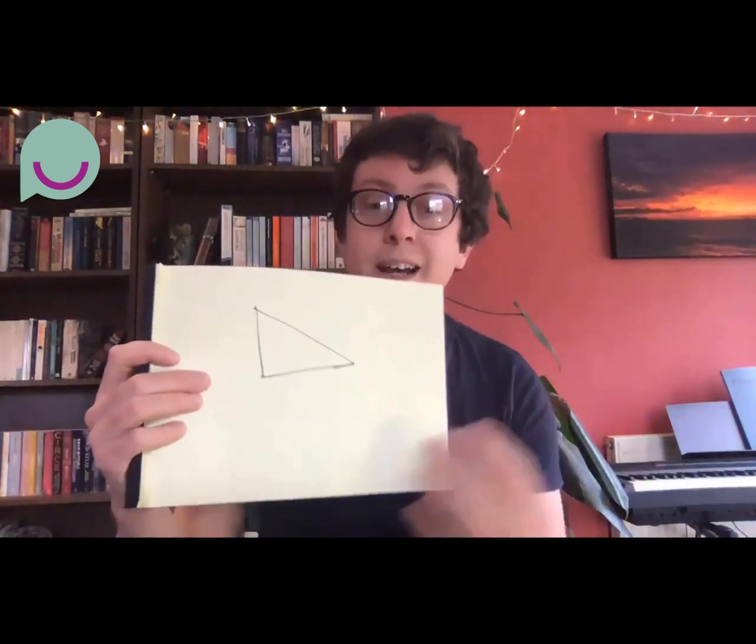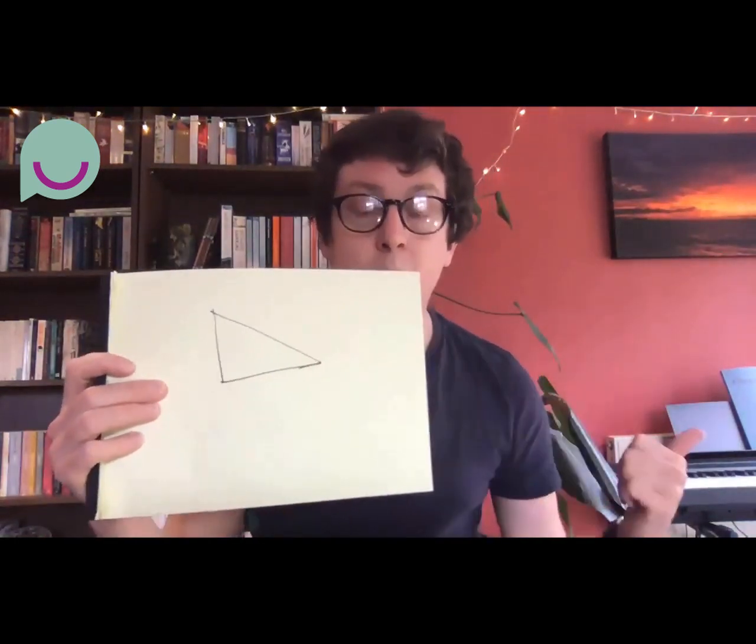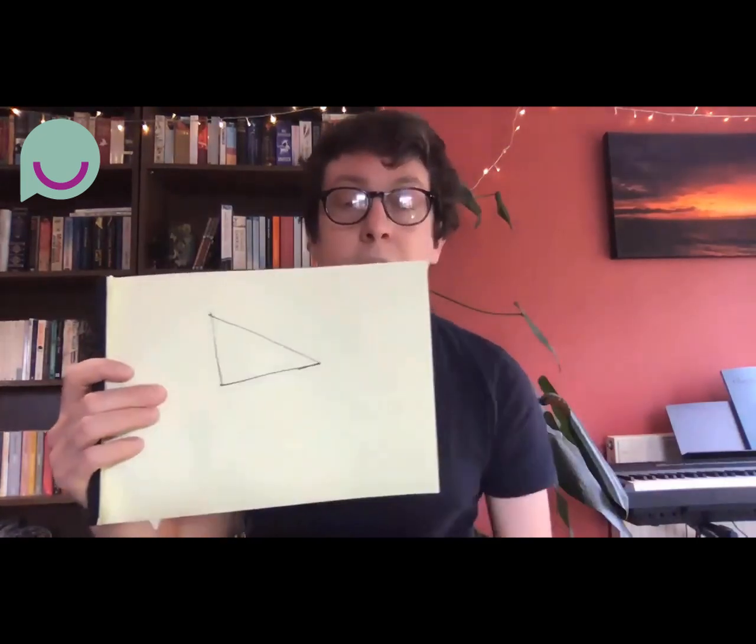So this is a flat piece of paper — you can see I'm quite the artist — a flat piece of paper with a triangle on it. If you add up the angles in the triangle, they will add up to 180 degrees. But if you have a curved space, like this basketball, things aren't quite so simple.